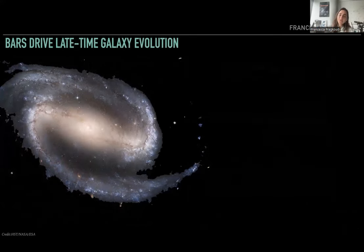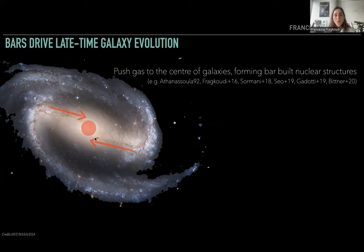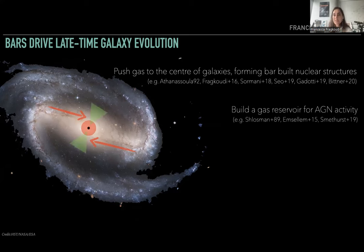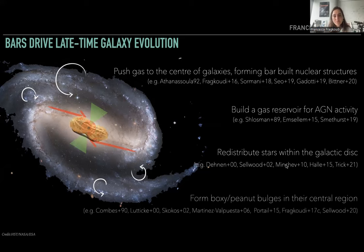How does this complex orbital structure drive the late-time evolution of galaxies? Bars can induce shocks in the gas found in galaxies. These shocks cause the gas to lose angular momentum and funnel to the central region along dust lanes, where it piles up and leads to bursts of star formation, forming bar-built nuclear structures. This gas pushed to the center can also help build up a reservoir for AGN activity, which is important at late times when other torquing mechanisms are not available. Bars can also redistribute stars within the disk through different resonances, such as corotation or the outer Lindblad resonance.